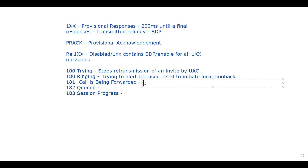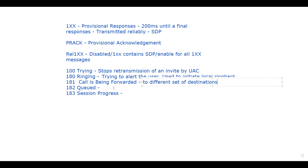After that we have 181 Call is Being Forwarded. A server will use this status code to indicate that the call is being forwarded to a different set of destinations. If the call is being forwarded to a different set of destinations, you will receive the 181 Call is Being Forwarded message.